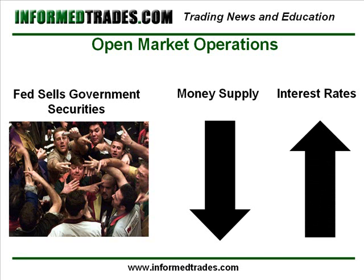When the Fed increases or decreases the supply of money, they are doing so to try and directly influence something which is known as the Fed funds rate, or the interest rate at which banks charge each other for overnight loans. With this in mind, we now know that when we hear the Fed has lowered or raised the Fed funds rate by a quarter of a percentage point or whatnot, for example, what has actually happened is they have increased or decreased the supply of money in the economy.